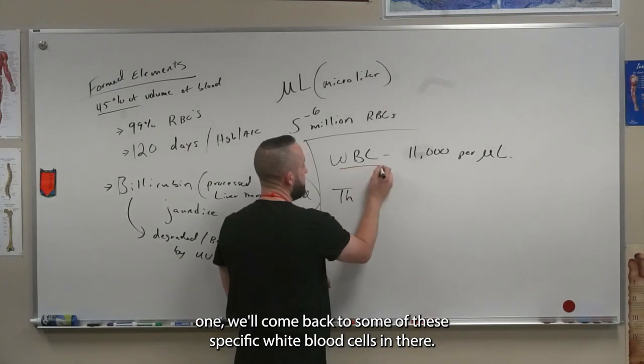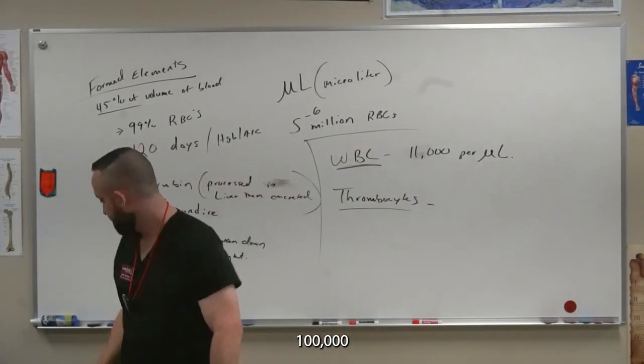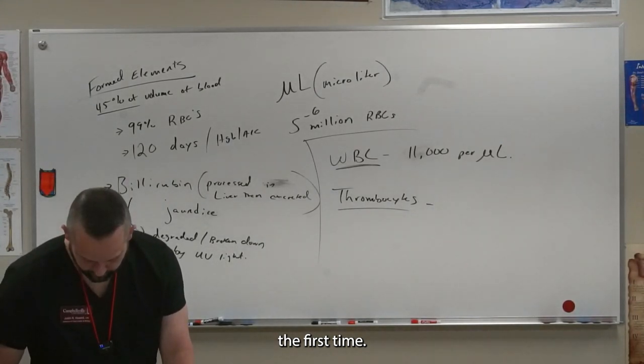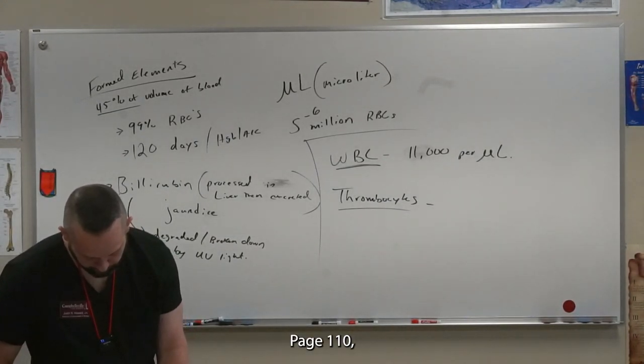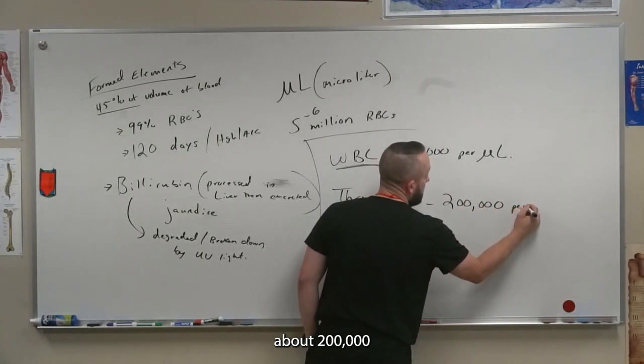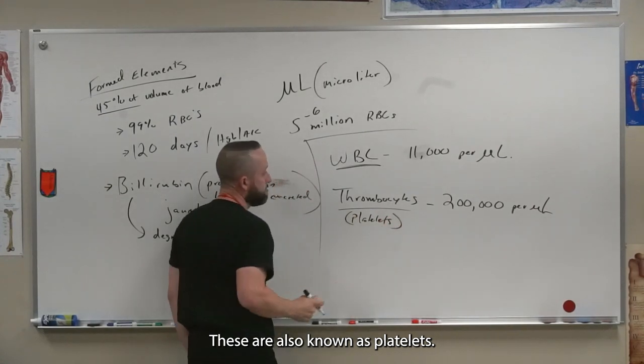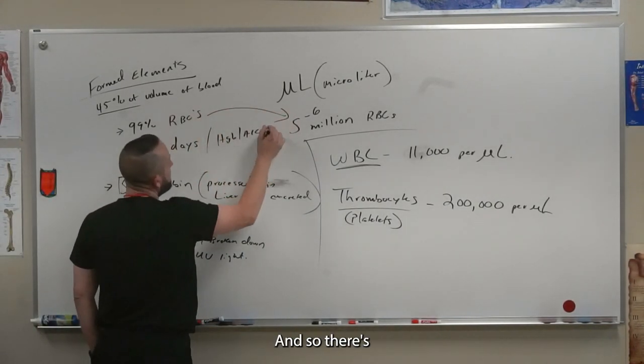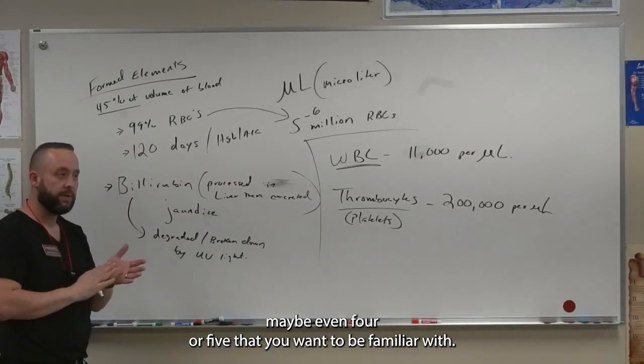The next one, and almost last one, we'll come back to some of these specific white blood cells in your book. It's 200,000 per microliter on page 110. These are also known as platelets. So there's one, two, three numbers, maybe even four, that you want to be familiar with.